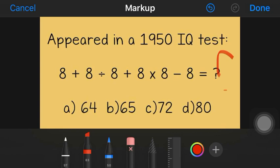Here we have to solve the value inside the question mark. We have four options: option A is 64, option B is 65, option C is 72, and option D is 80.